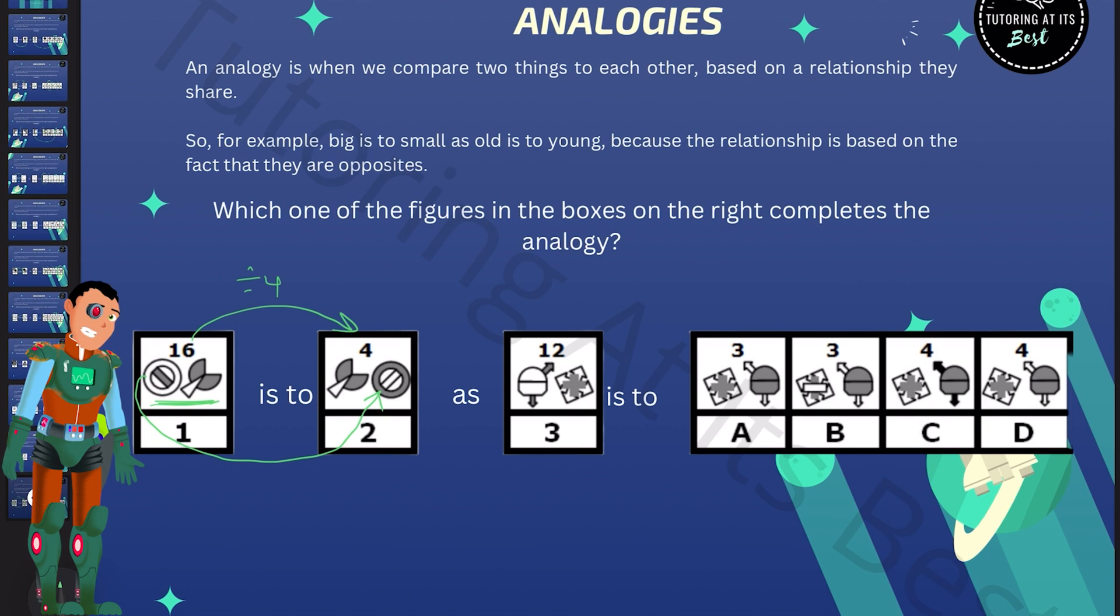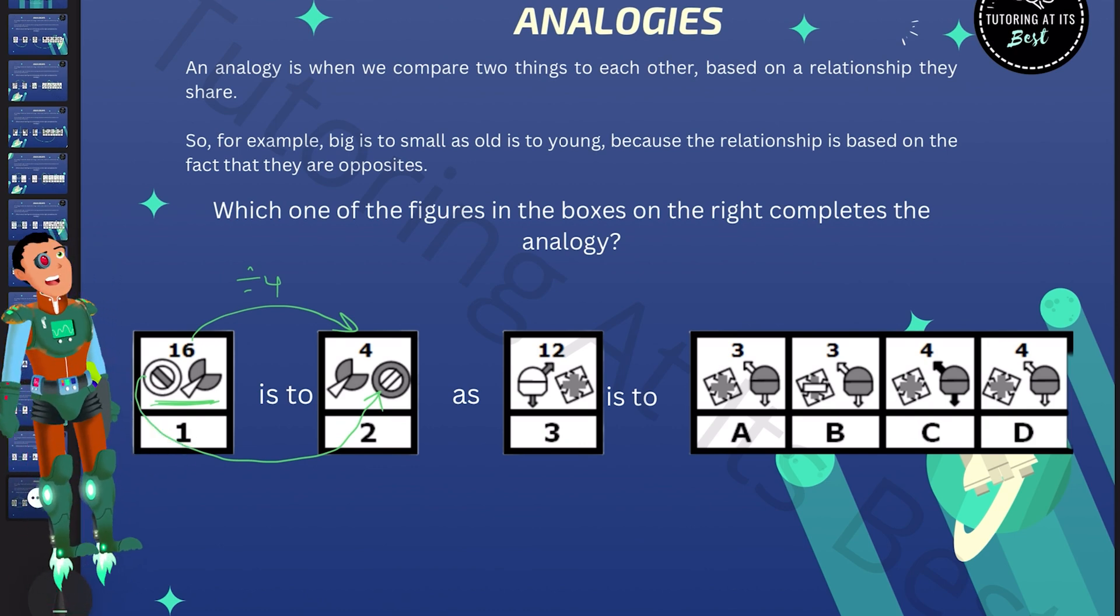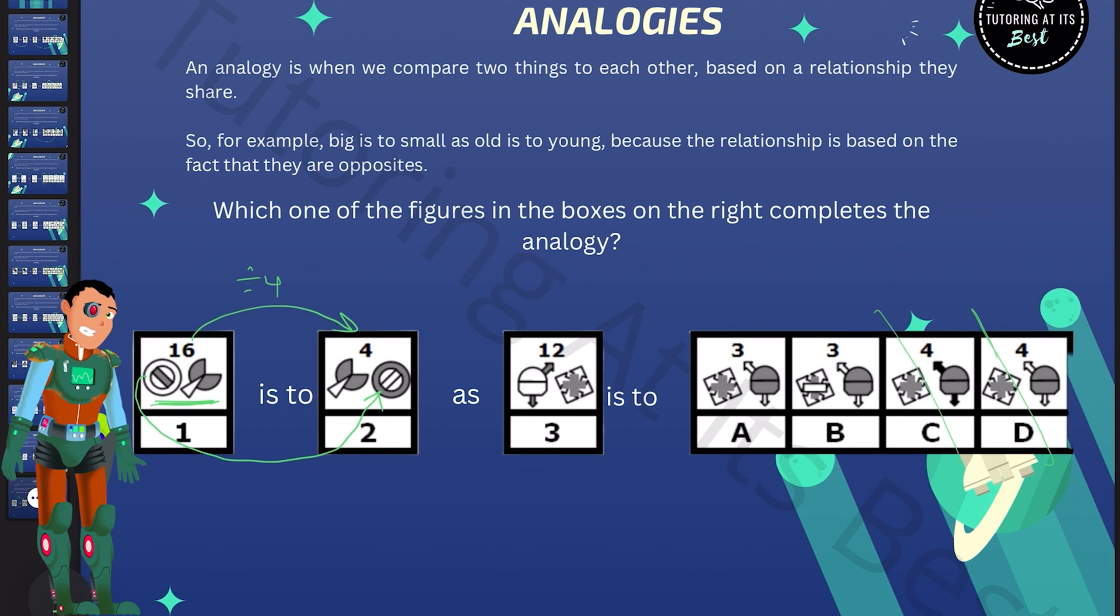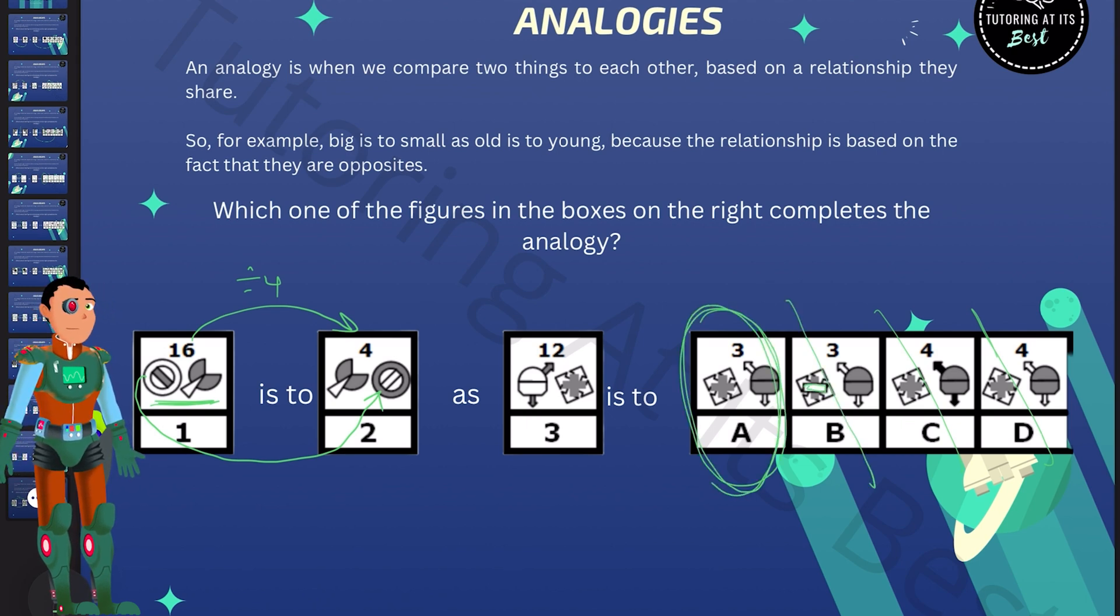So you should look for a box with a three in it because 12 divided by four is three. So instantly we eliminate D and C. So remember the left shape should be unchanged. So for that reason, we eliminate B as that's got a little rectangle in the middle and A is now our answer.